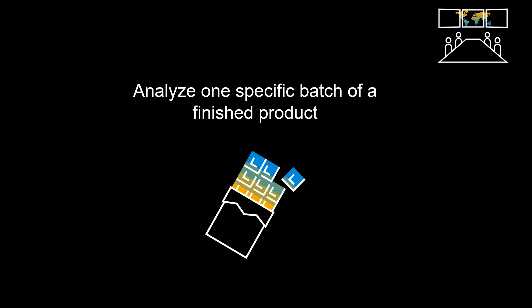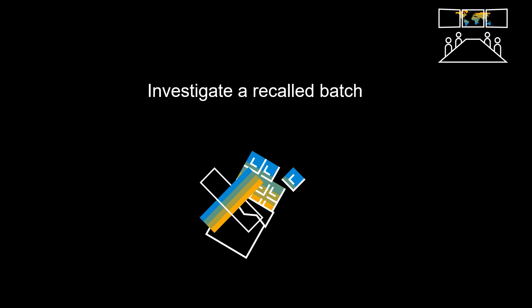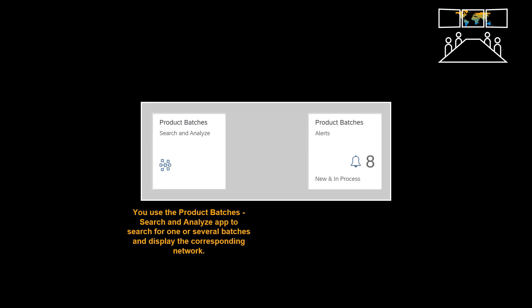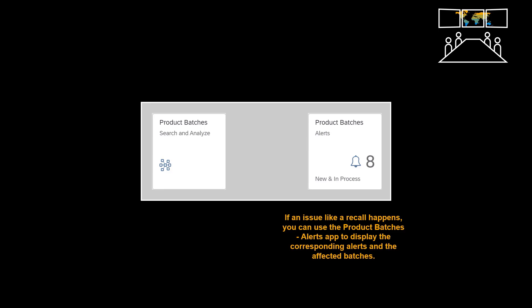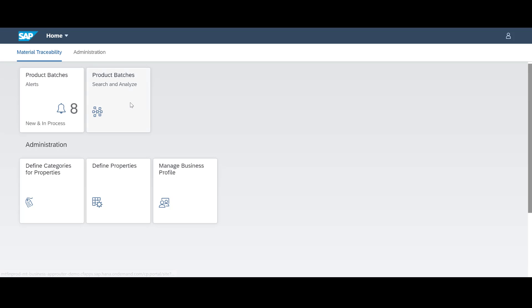We will now look at a couple of relevant use cases. First, we will analyze one specific batch of a finished product. Afterwards, we will investigate a recalled batch. We will utilize two different Fiori apps. The product batches search and analyze app is used to search for one or several batches and display the corresponding network. If an issue like a recall happens, we can use the product batches alerts app to display the corresponding alerts and the affected batches. We start by opening the product batches search and analyze app.